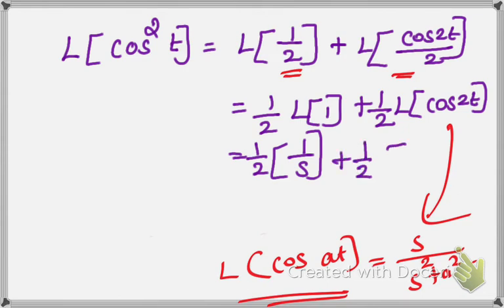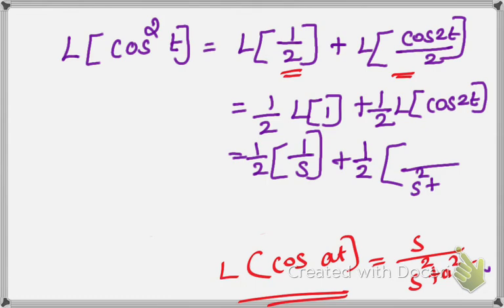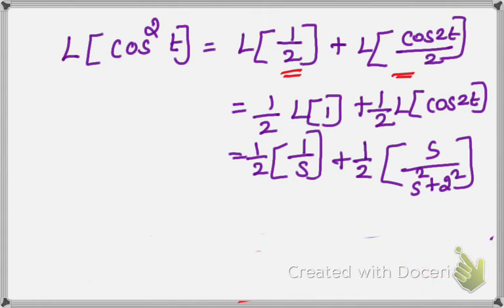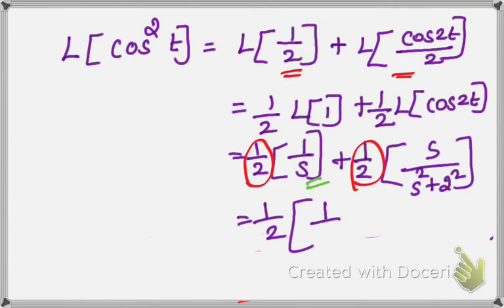So L of cos at equals s by s squared plus a squared. Here, a equals 2, so we get s by s squared plus 2 squared, which is s by s squared plus 4. Taking 1 by 2 outside as a common factor, the remaining terms are: first term 1 by s, and second term s by s squared plus 4.